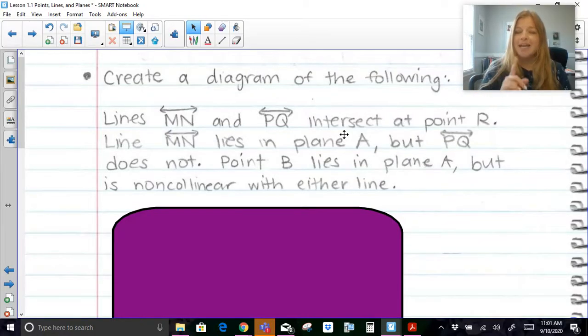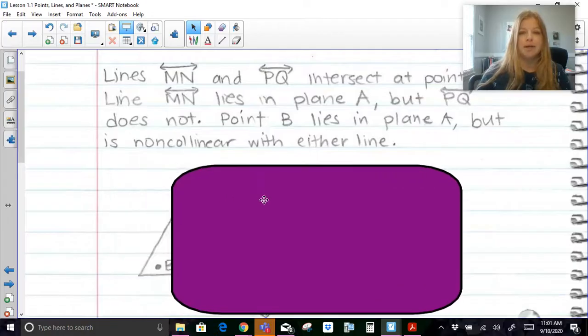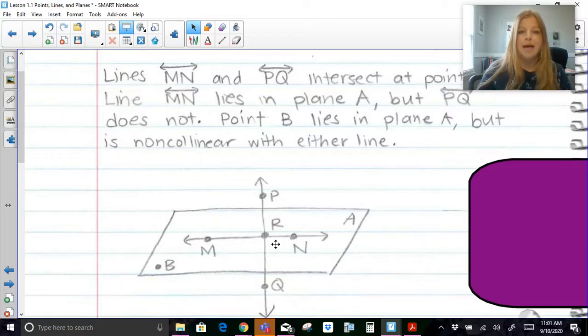You might have a diagram that looks a little different than mine, but all of those rules, if you were to reread them, should still apply. This is what my diagram looks like. Line MN and PQ intersect at point R. Line MN lies in plane A, but PQ, line PQ, does not. Point B lies in plane A, but is non-collinear with either line. Point B should be something that's not lined up with MN or PQ.